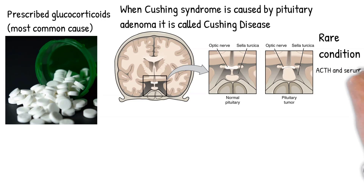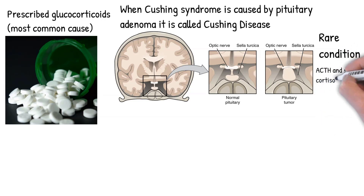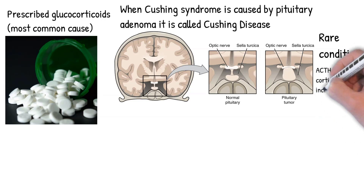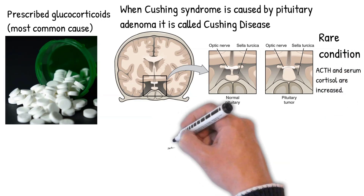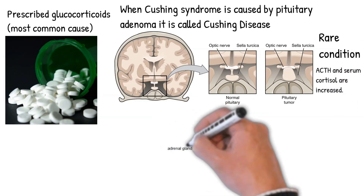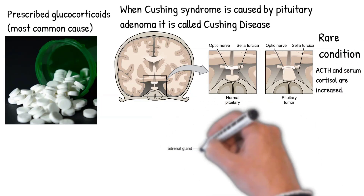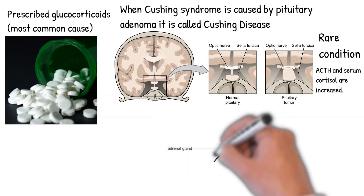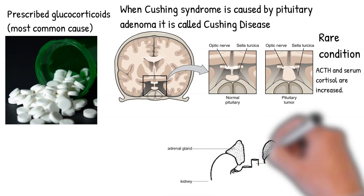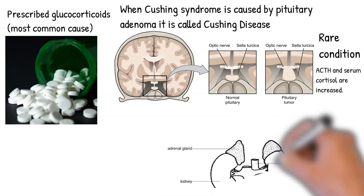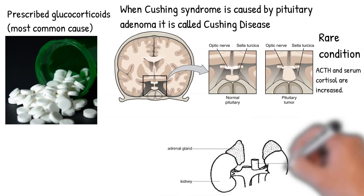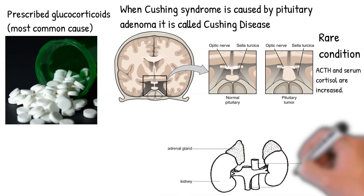However, asymptomatic micro-adenomas less than 10 mm in size of the pituitary are found in about 1 in 6 individuals. A pituitary adenoma producing increased amounts of ACTH leads to excess production of cortisol by the adrenal cortex.